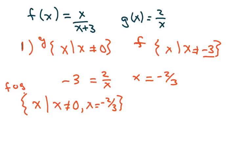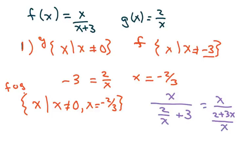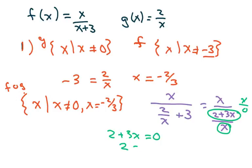I'll compose these two to verify. You get x over 2 over x plus 3, which simplifies to x over 2 plus 3x over x. Clearly x cannot be 0. But setting the denominator 2 plus 3x equal to 0, you get 2 equals negative 3x, so x equals negative 2 thirds. There it is — confirming both restrictions.